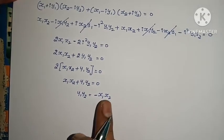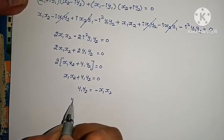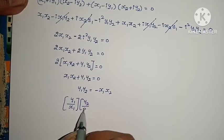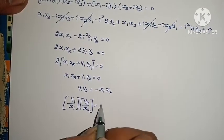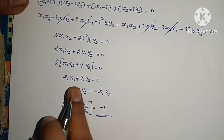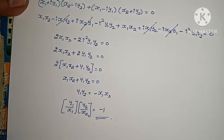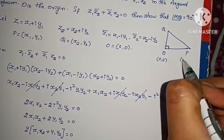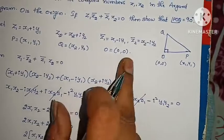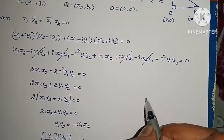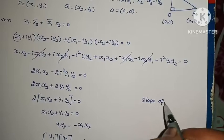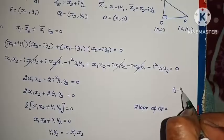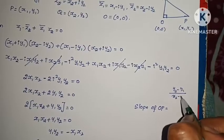Dividing both sides: (y1/x1) × (y2/x2) = −1. Now, y1/x1 is the slope of OP (from origin O at (0,0) to P at (x1, y1)), and y2/x2 is the slope of OQ (from O to Q at (x2, y2)). The slope formula is (y2 − y1)/(x2 − x1).